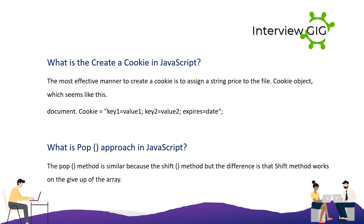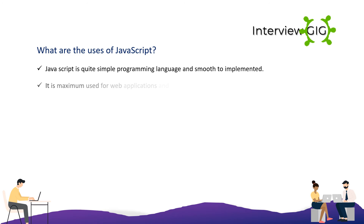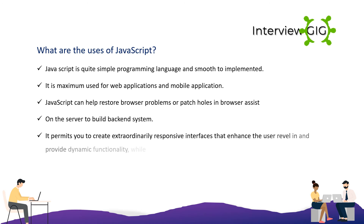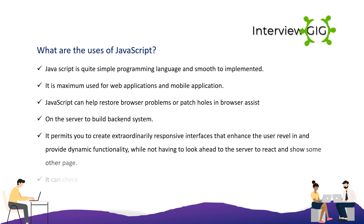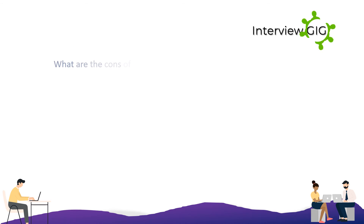What are the uses of JavaScript? JavaScript is a simple programming language and smooth to implement. It is most used for web applications and mobile applications. JavaScript can help resolve browser problems or patch holes in browser support. On the server, it can build back-end systems. It allows you to create extremely responsive interfaces that enhance user experience and provide dynamic functionality without waiting for the server. It can check what's possible in your browser and react accordingly — this is referred to as unobtrusive JavaScript or defensive scripting.